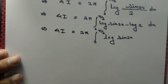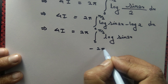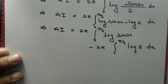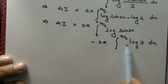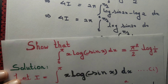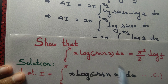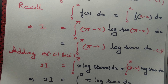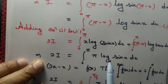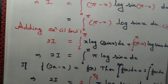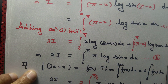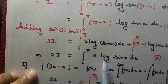So 4I equals 2π times the integral from 0 to π/2 of log(sin(2x))dx, minus 2π times the integral from 0 to π/2 of log 2 dx. Now the second term is computable. Observe that I = ∫₀^π x·log(sin x)dx, and we also have 2I = ∫₀^π π·log(sin x)dx — let us write this as equation (star).